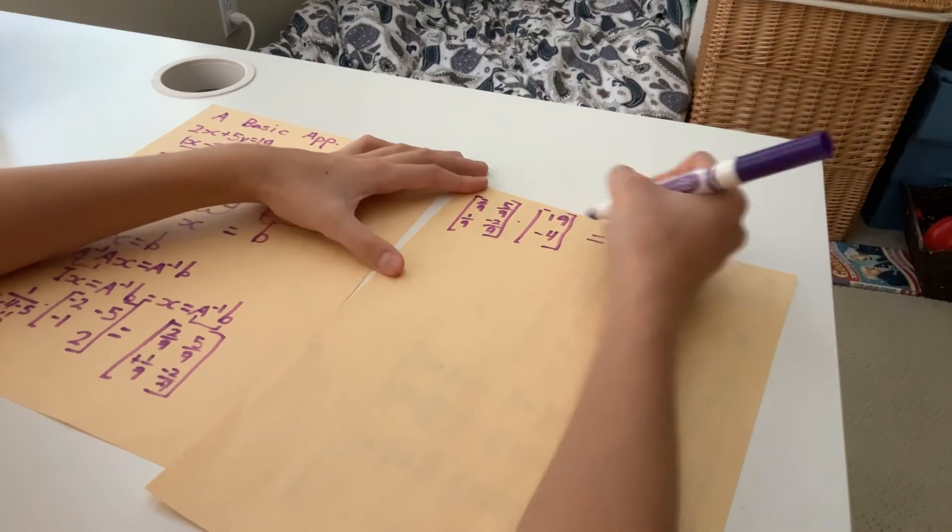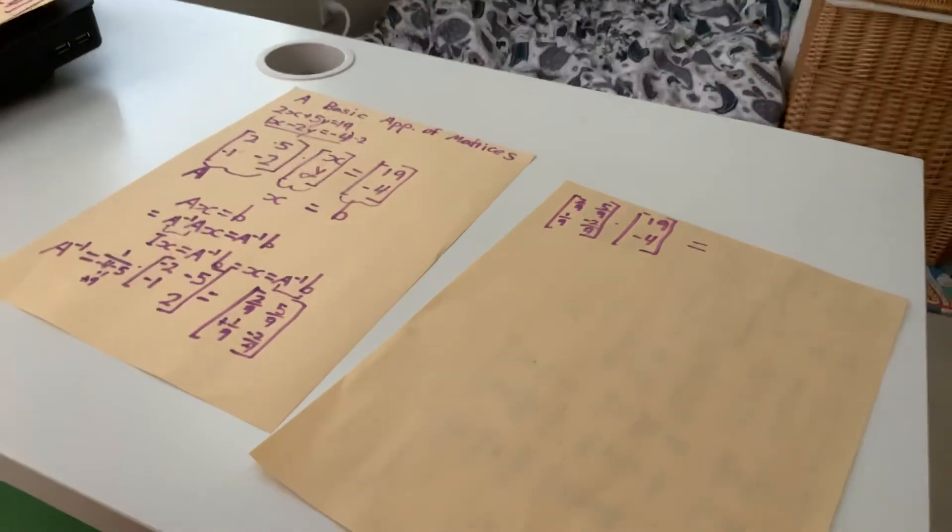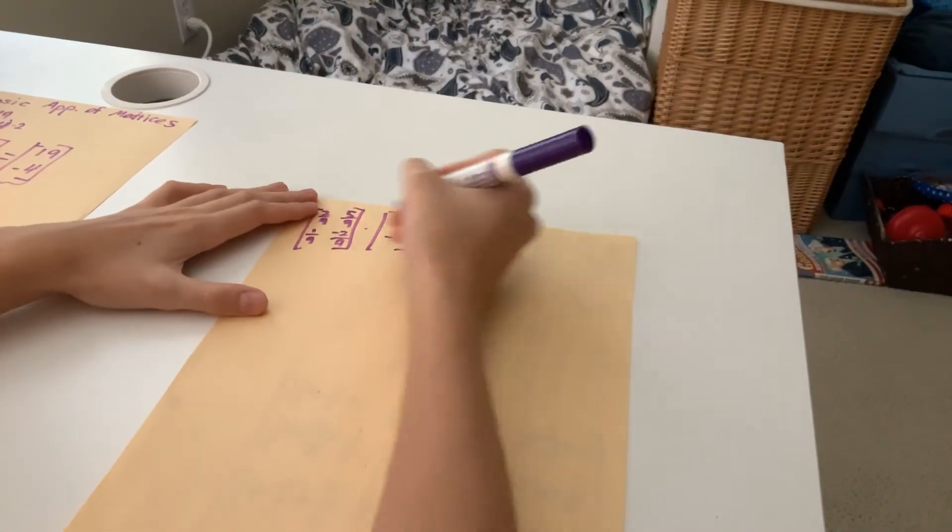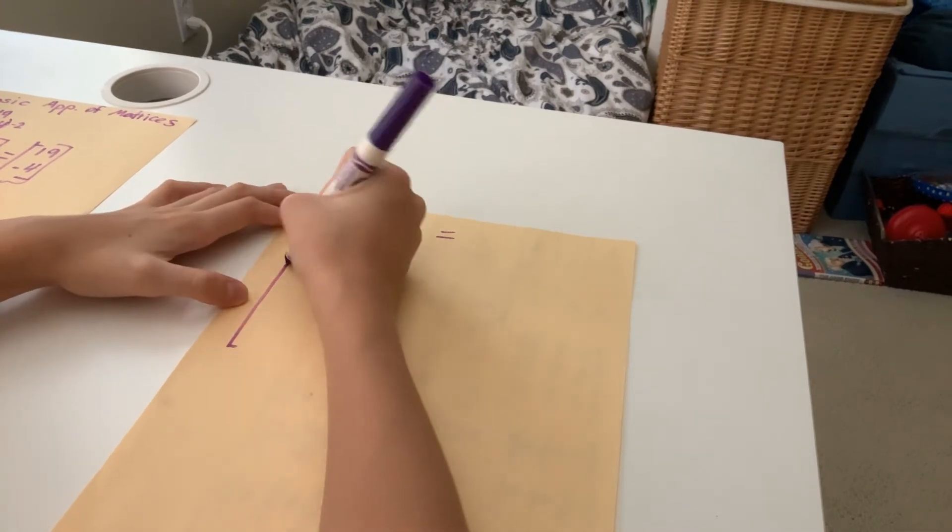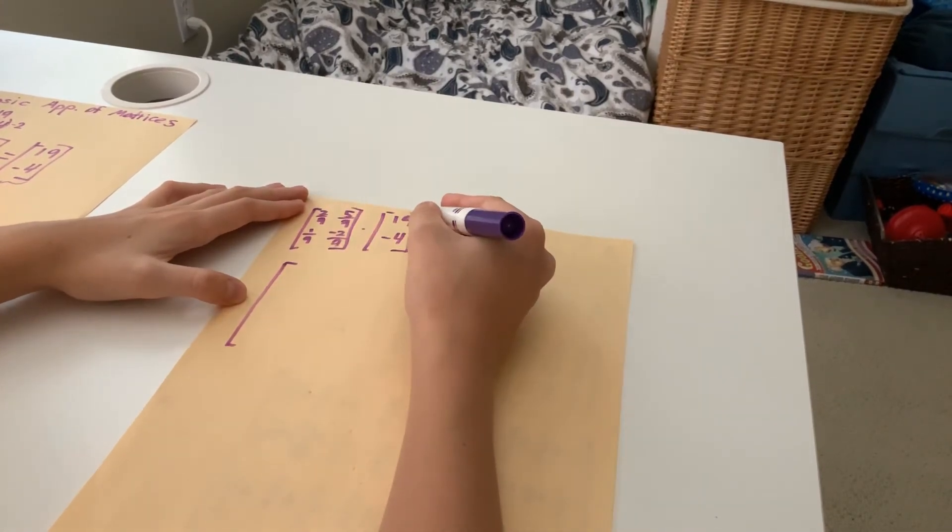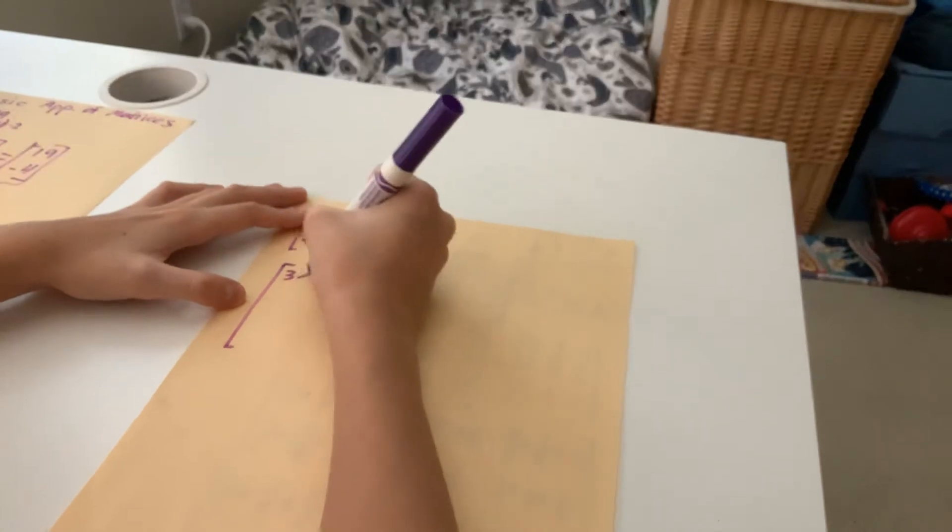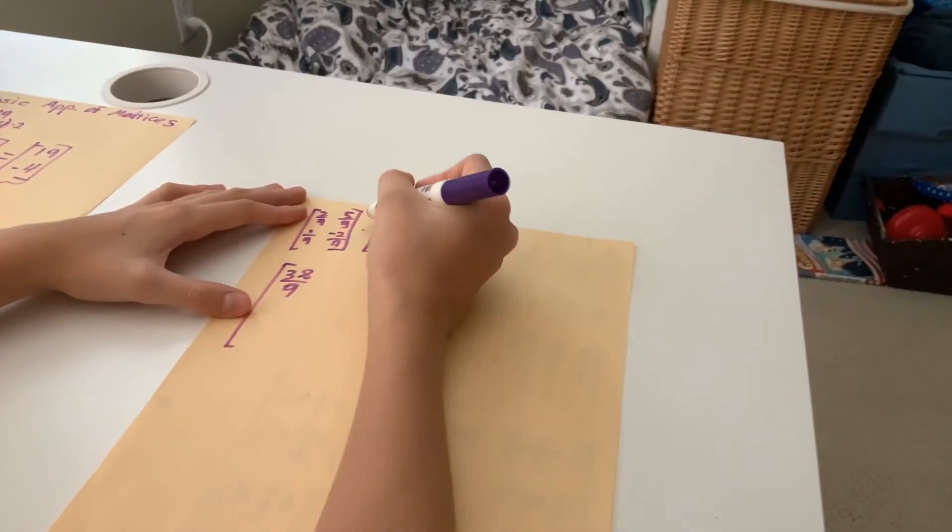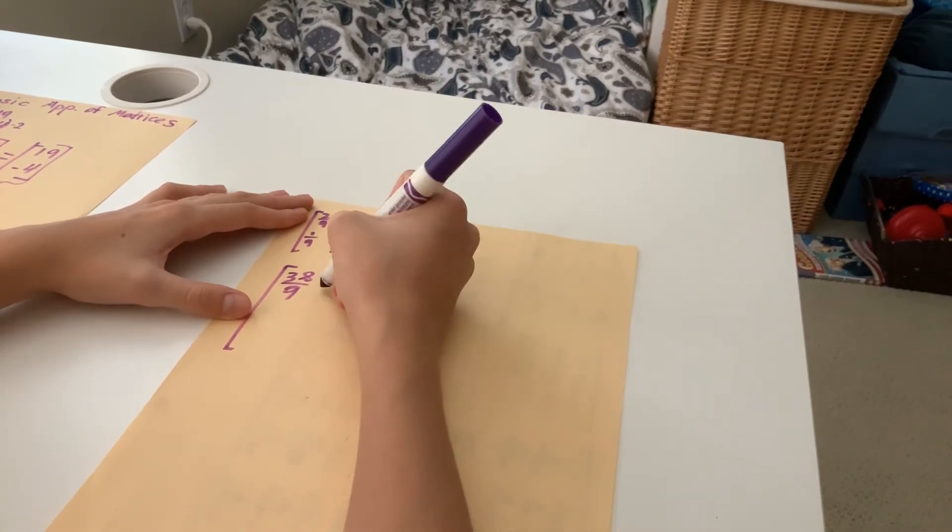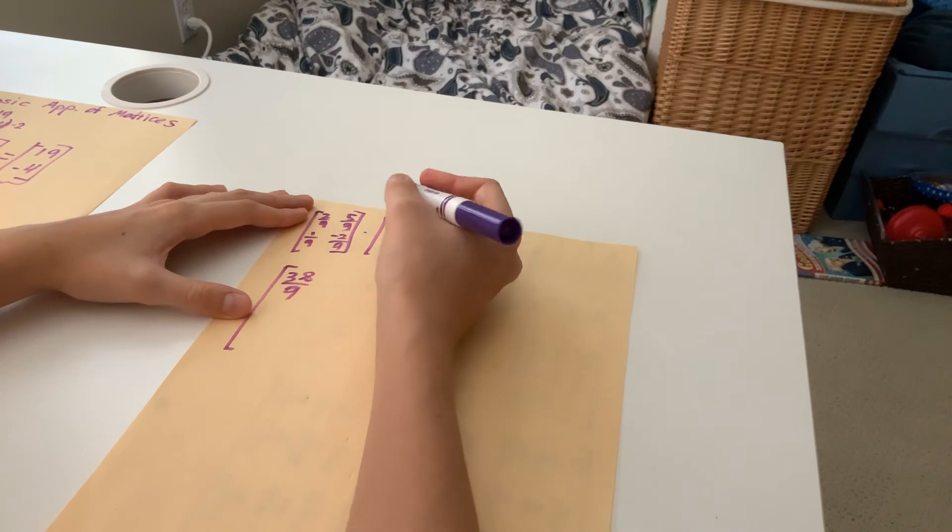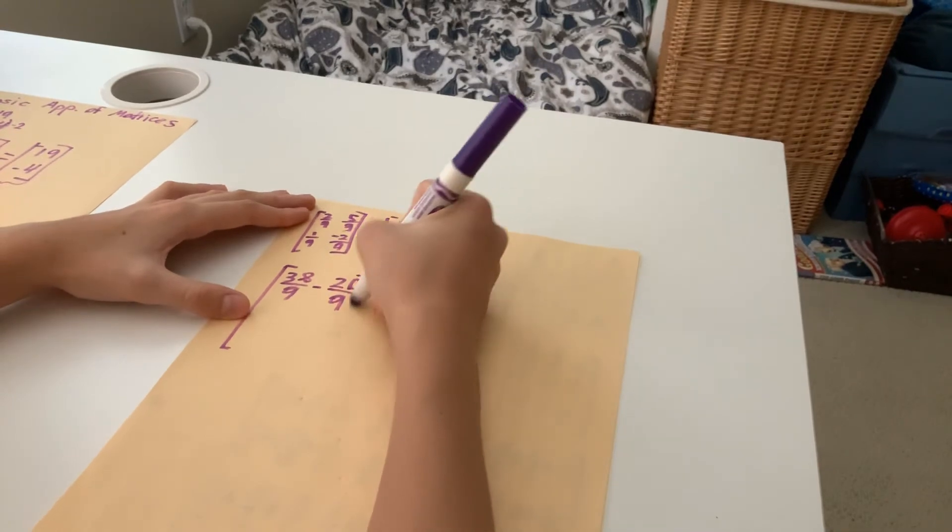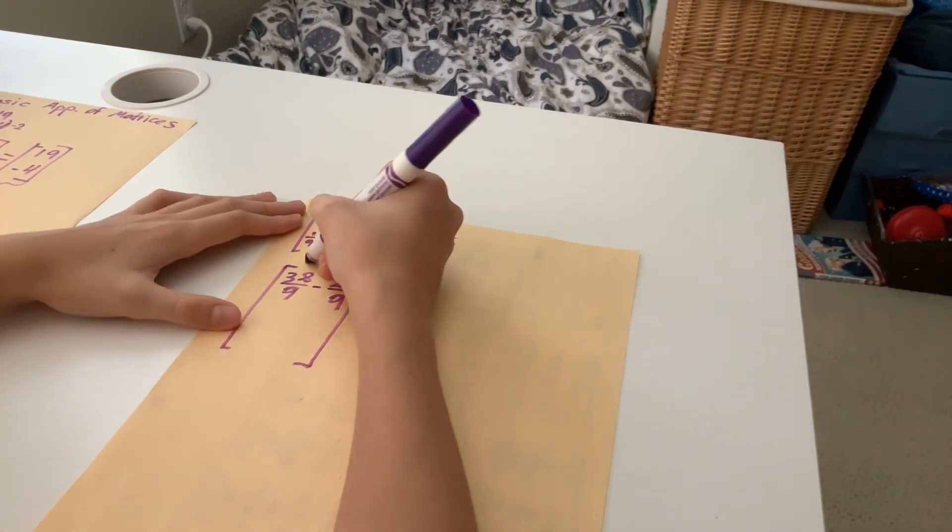So now let's just place our newly found inverse of A. So that's 2 over 9, 5 over 9, 1 over 9, negative 2 over 9, times positive 19 over negative 4, just like that. And now we're just going to use dot product method. So we don't have to worry about that paper anymore. So let's simplify this.